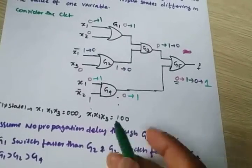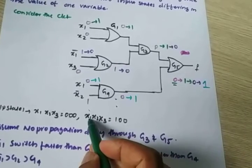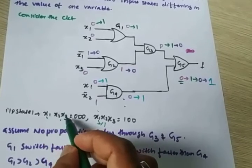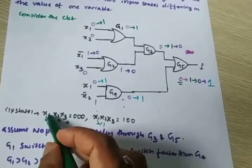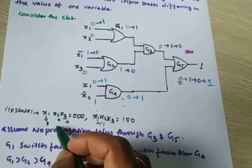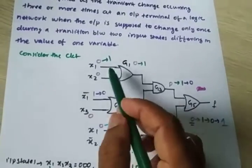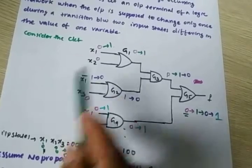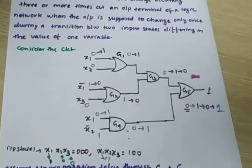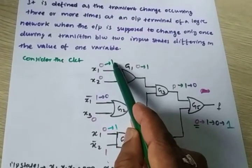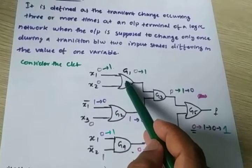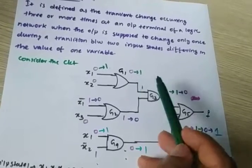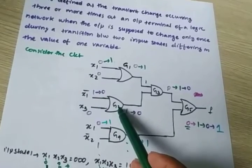Now I am changing x1 from 0 to 1, making the input 1,0,0. X2 and x3 remain zero. Since g1 switches very fast and x2 is 0, this gate responds quickly: the output becomes 0 plus 1 equals 1. So the output changes from 0 to 1, and that 1 propagates forward.